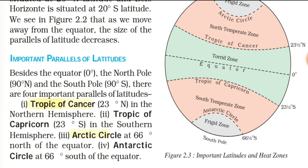The third important parallel is the Arctic Circle at 66 degrees North, and the fourth is the Antarctic Circle at 66 degrees South of the equator.